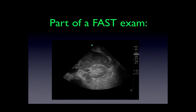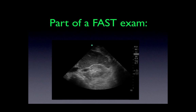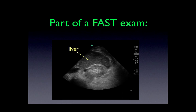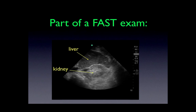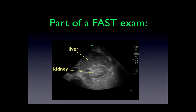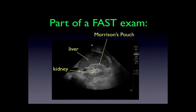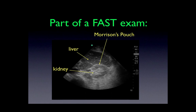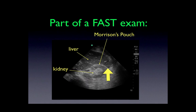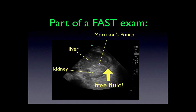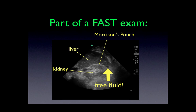Now we're seeing part of a FAST scan. The liver is noted to be more anterior. The right kidney is at the tip of this arrow. Morrison's pouch is the space in between. This is a potential space and there should never be an anechoic area, which would represent fluid. But yet there is free fluid at the tip of the FAST arrow — it doesn't belong there.